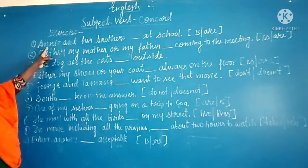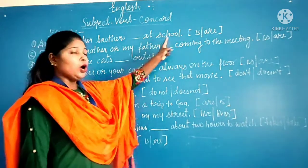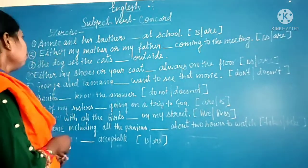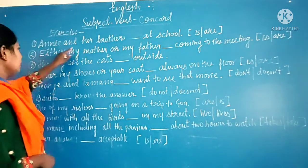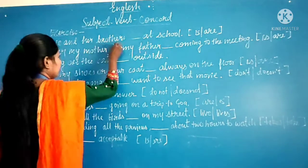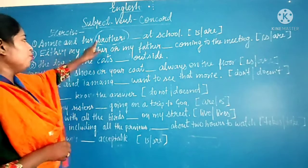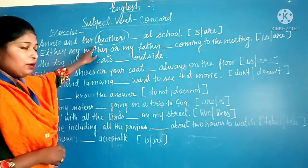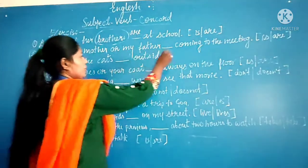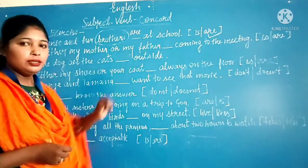The first sentence is: 'Amy and her brothers ___ at school.' The options are 'is' and 'are.' First, look at the subject — Amy and her brothers. Brothers is in plural form, so the subject is plural. Therefore, 'are' is correct. Amy and her brothers are at school.